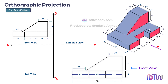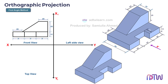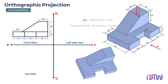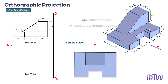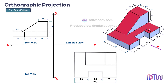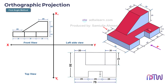Next, we will draw the top view. When we view the object from the top, this is how it will look — we can see only this part of the object. We already know the total length is 75 millimeters. This length is 50 millimeters, this length is 12 millimeters, and this rectangle's width will be 20 millimeters and its height will be 25 millimeters. This distance is given as 20 millimeters. We will draw the projection lines from the front view.